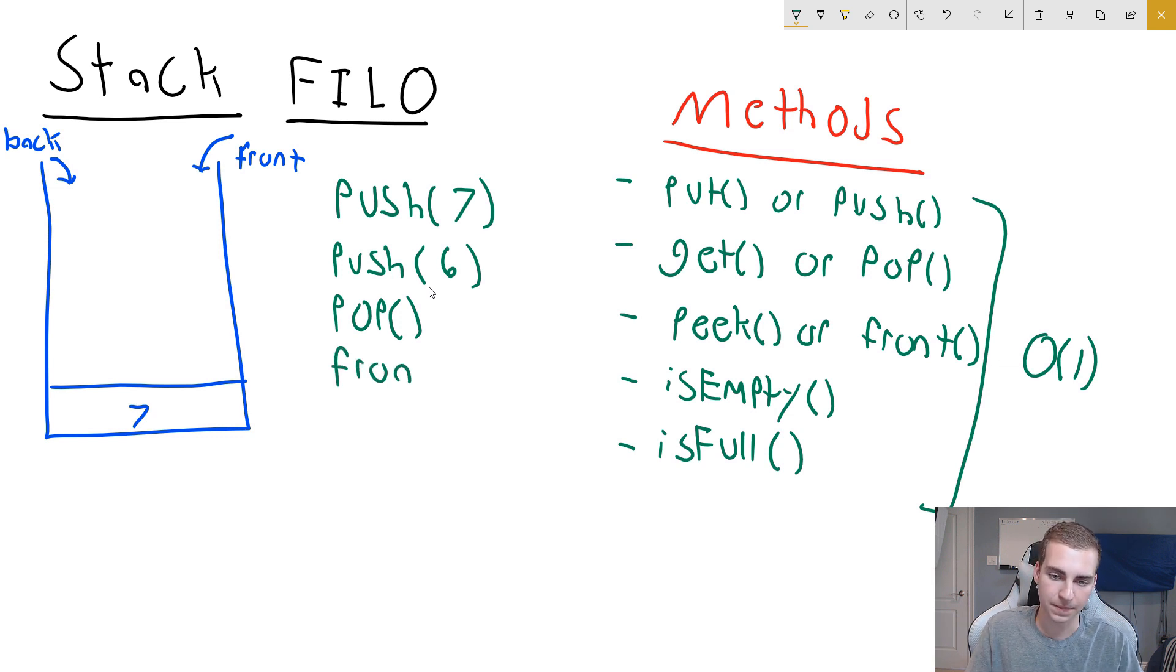So if I call front here, what's going to happen is we're going to look, we're going to see seven is there, and we're going to return seven to wherever we called front. So seven is going to go here. But we're not going to remove it from the stack. Again, it's a very useful thing that we oftentimes want to do. Alright, so that is how you kind of do that, we can use peek, front, whatever we're calling it again for that.